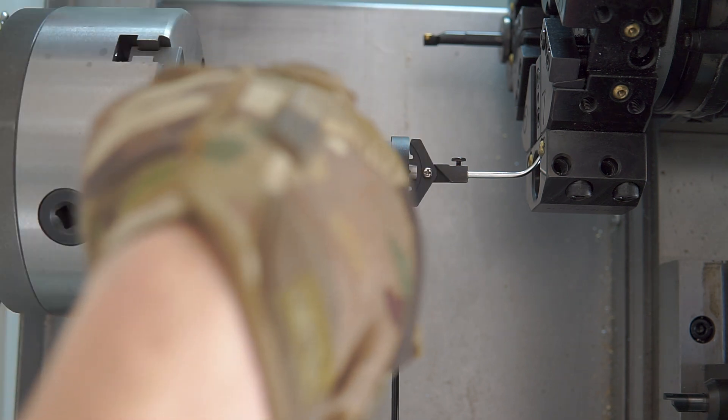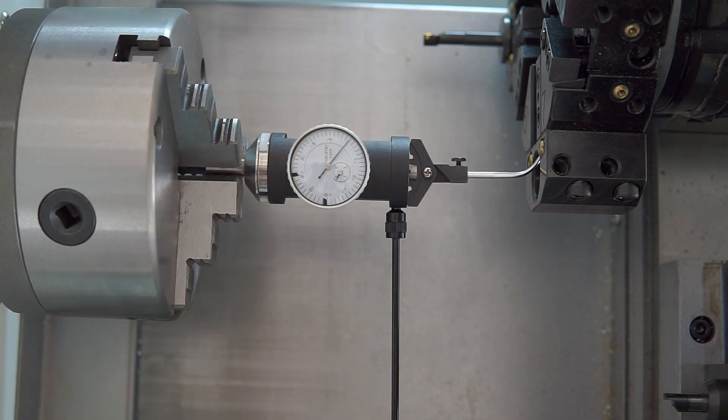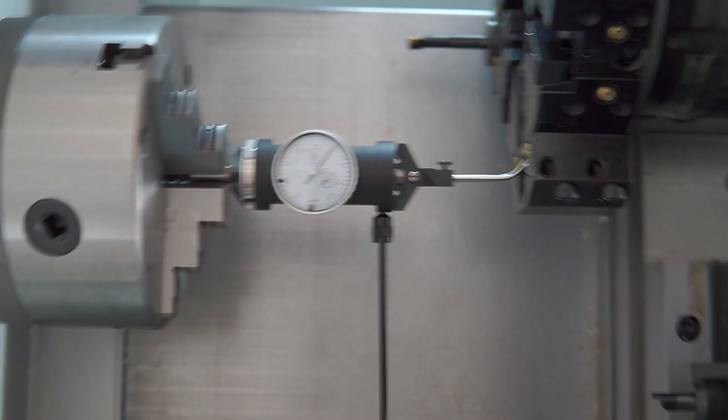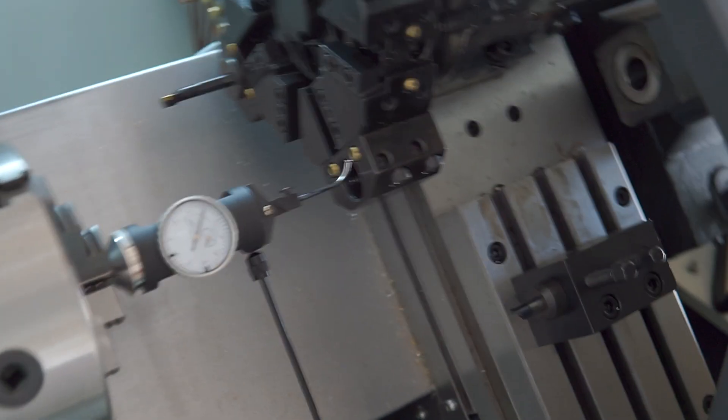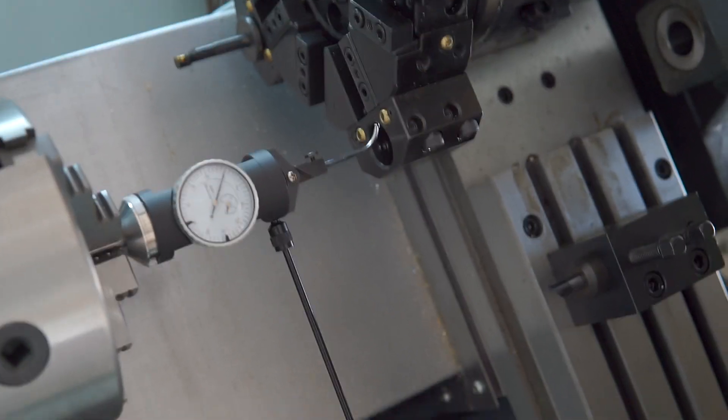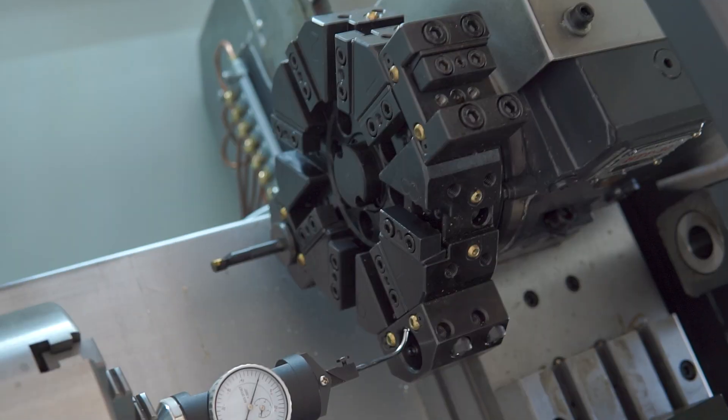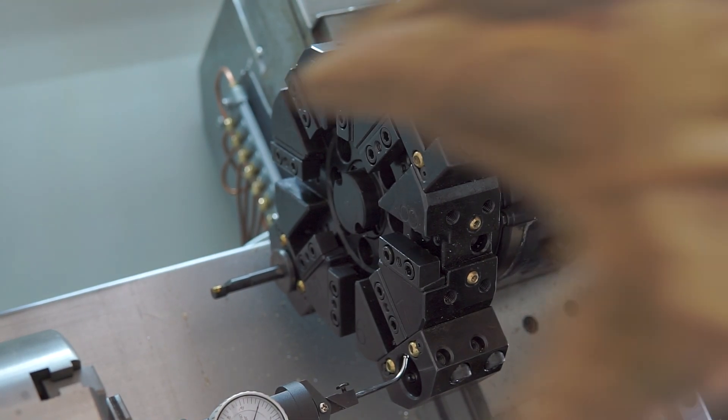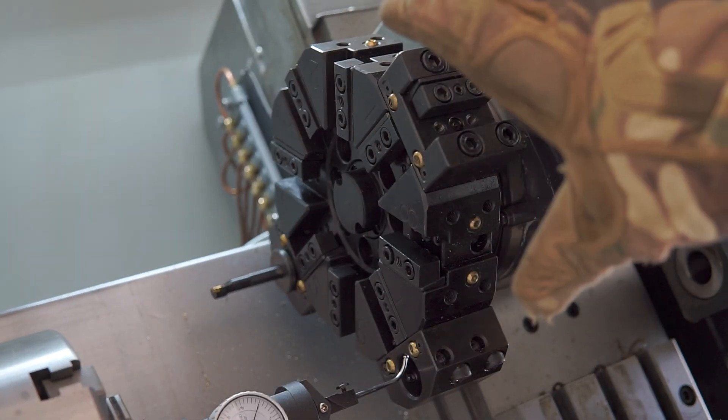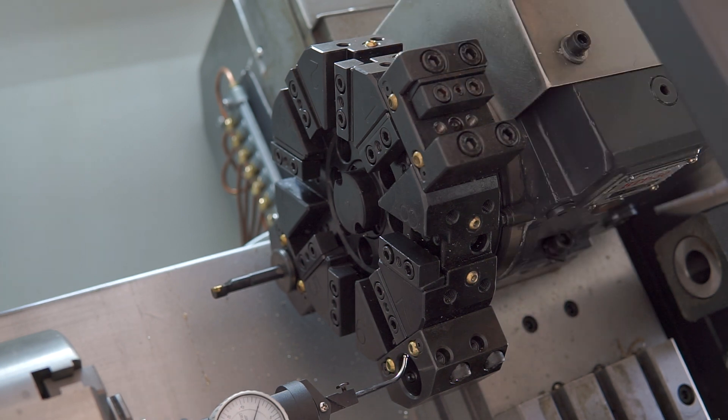Because we're on a slant bed, it's a little bit different than a flat bed would be, but essentially the turret had very slightly twisted. This doesn't normally happen but typically happens during a major crash—it would have gone out by quite a lot—or in this case, just by maybe rough handling with improper speed and feed.